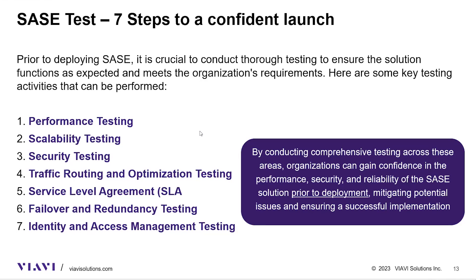Step two is scalability testing: determine the scalability of the SASE solution by testing its ability to handle increasing numbers of users, network traffic, and addition of new sites. Evaluate performance and stability as the network grows to ensure it can manage increased demand seamlessly. Step three is security testing: validate the effectiveness of security features including firewall capabilities, intrusion detection and prevention mechanisms, data loss prevention, and secure web gateways. Perform vulnerability assessments to identify potential weaknesses and ensure compliance with regulatory requirements.